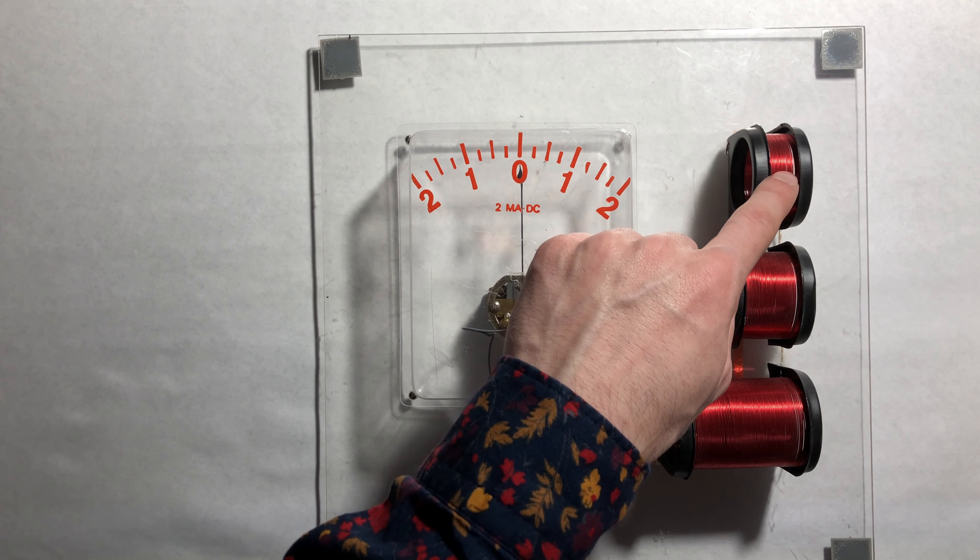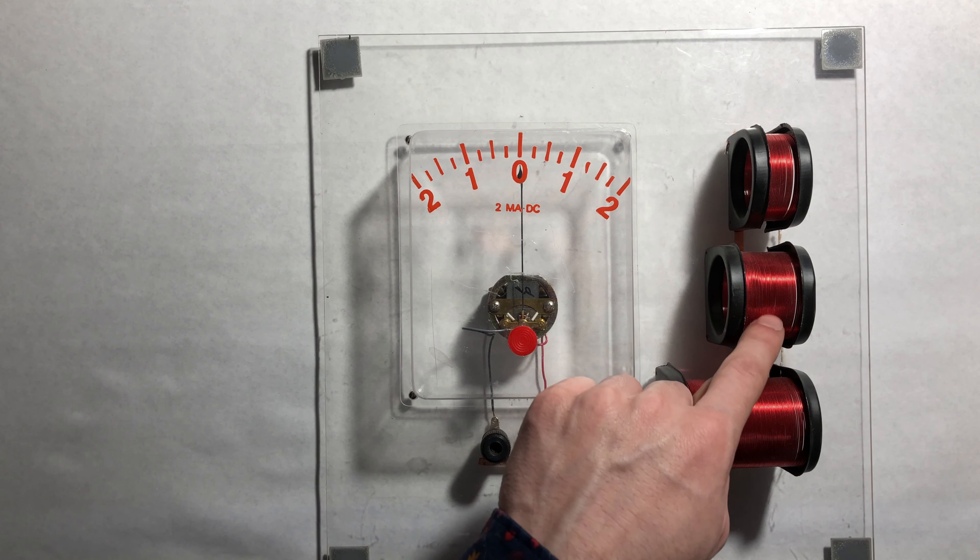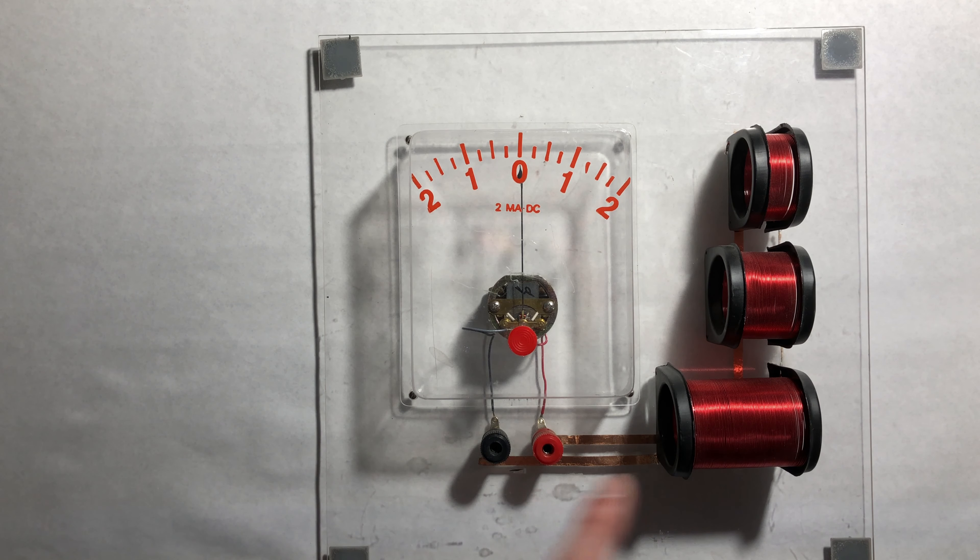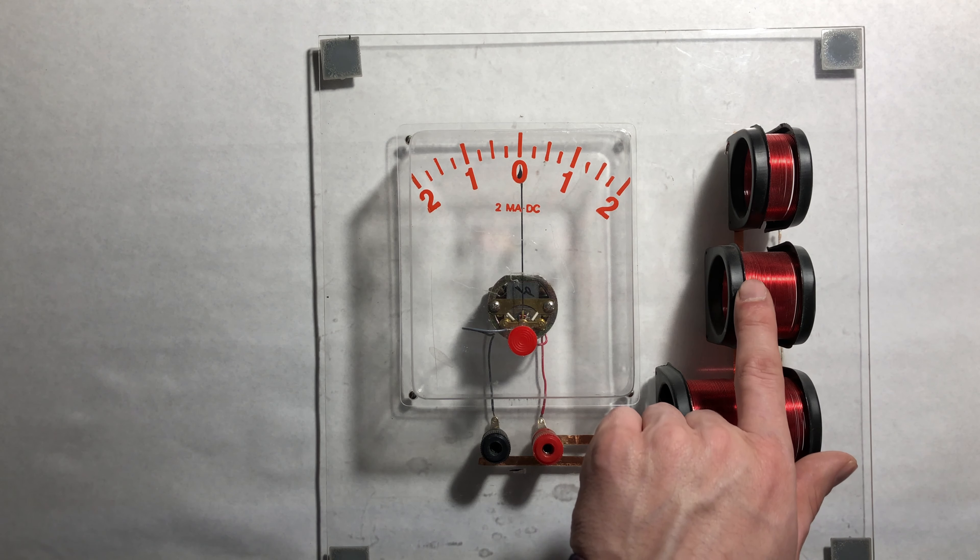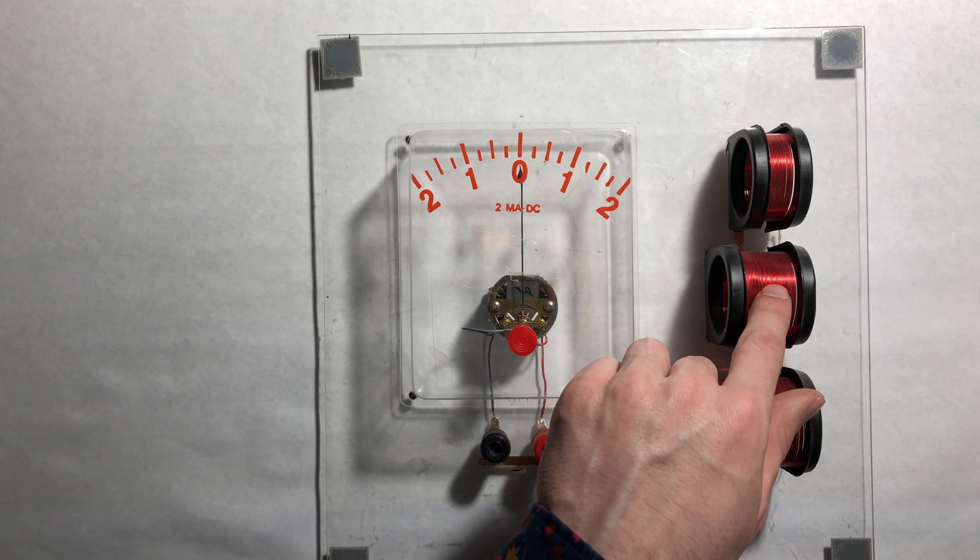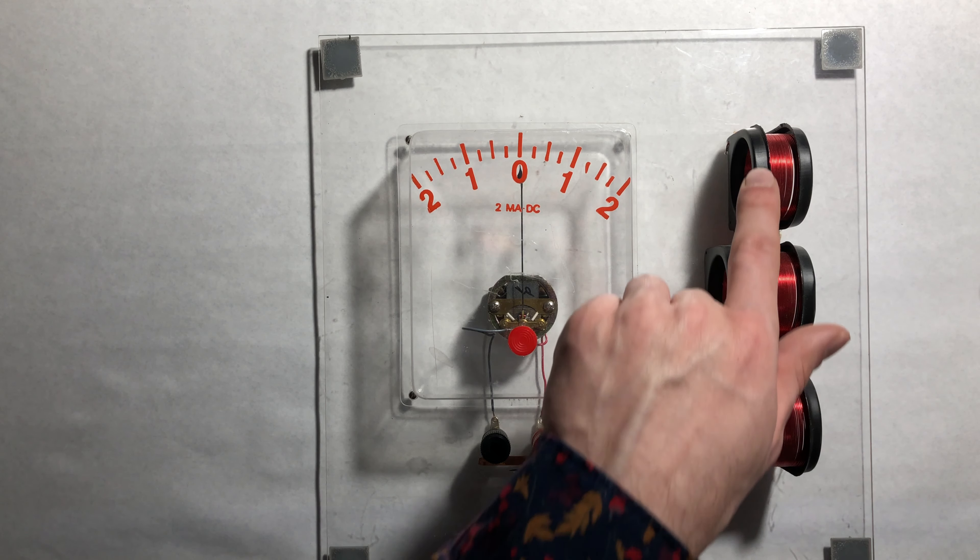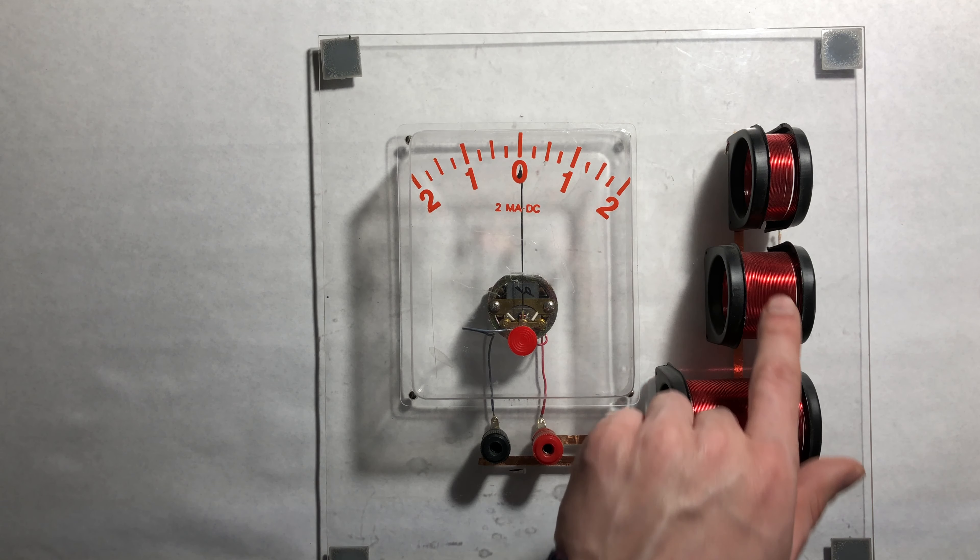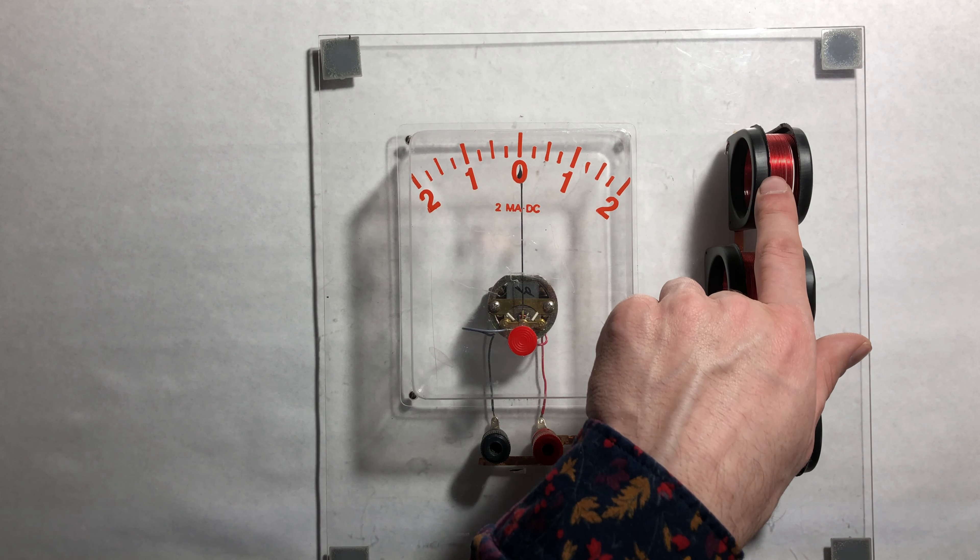Now the only difference between this coil and this coil is that this one has about twice as many turns and this one has about twice as many turns as that. And so as we go down our coils this one should have twice the turns, this should have four times the turns as our first coil.